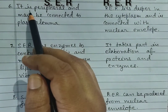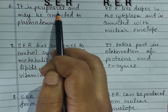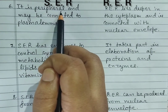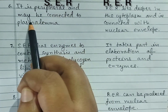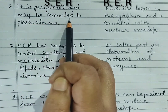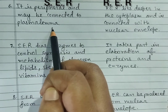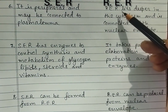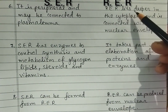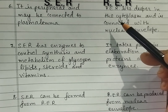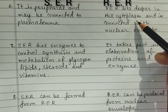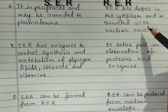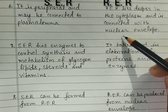Sixth difference — in smooth, it is peripheral and may be connected to the plasmalemma. Rough endoplasmic reticulum lies deeper in the cytoplasm and is connected with the nuclear envelope.